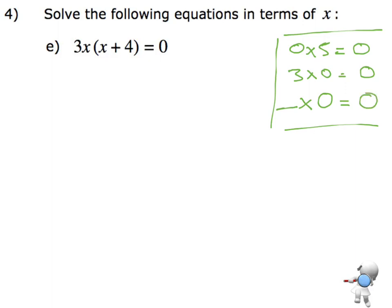Now I want to use that rule and extend that to algebra for what we're dealing with here. So what we've got is 3x times all of x plus 4 is equal to 0. So what I'm saying is that I've got something times something has to be equal to 0.